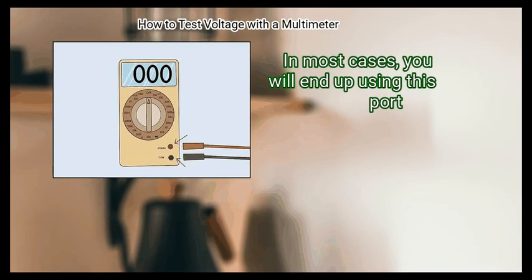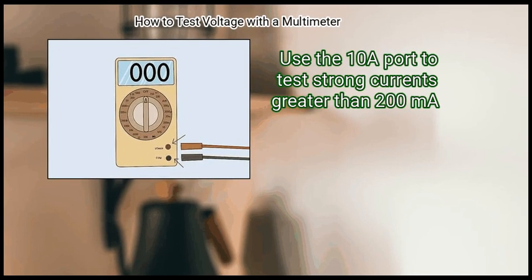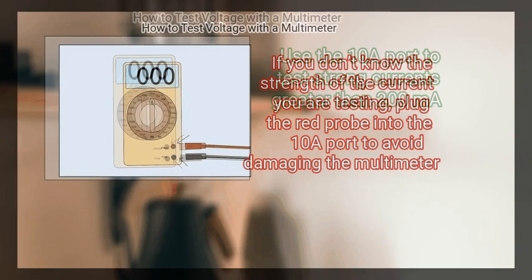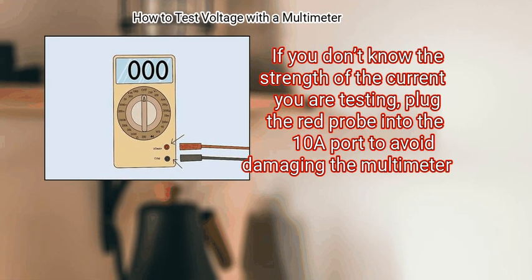The mA V Omega port is meant for currents rated at 200mA. In most cases, you will end up using this port. Use the 10A port to test strong currents greater than 200mA. If you don't know the strength of the current you are testing, plug the red probe into the 10A port to avoid damaging the multimeter.